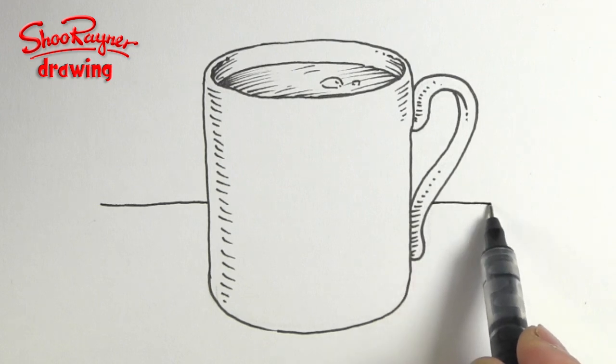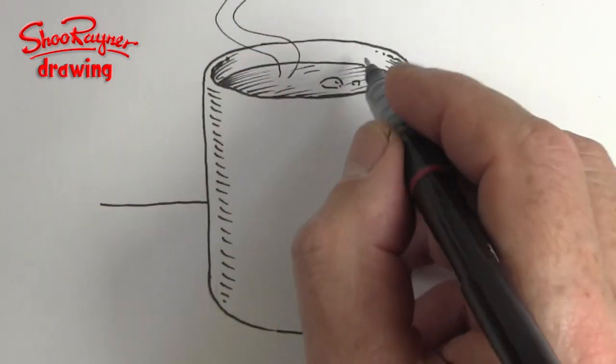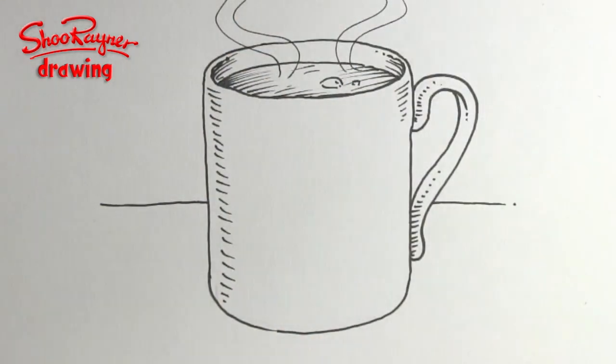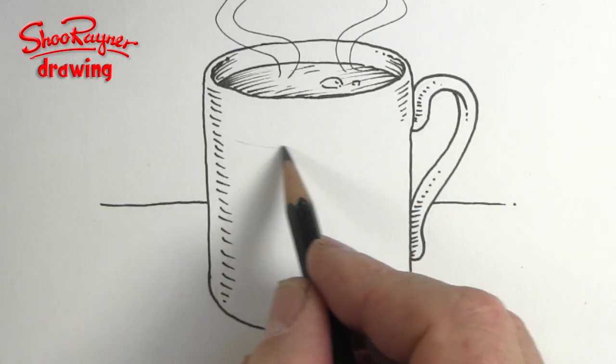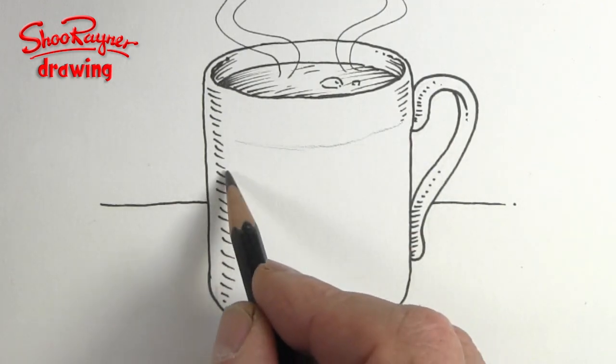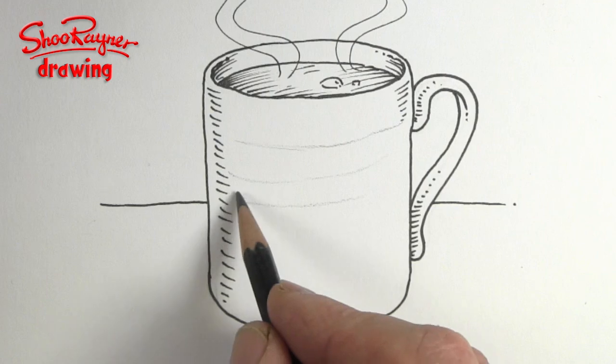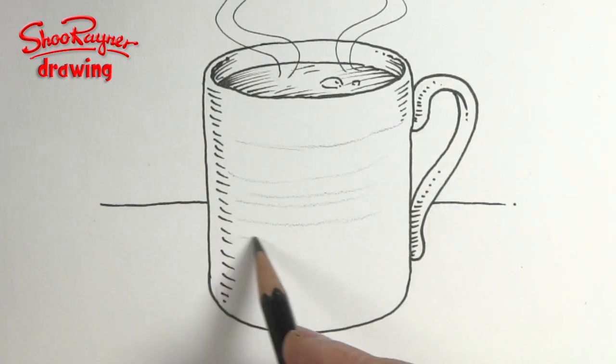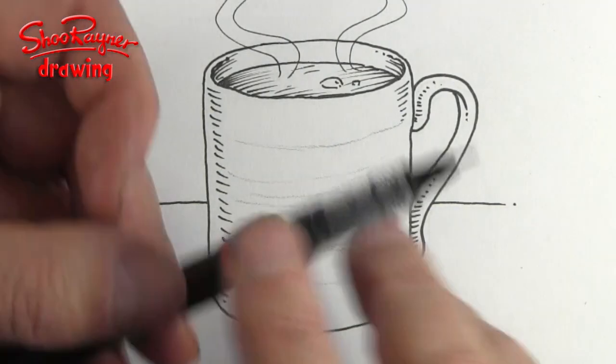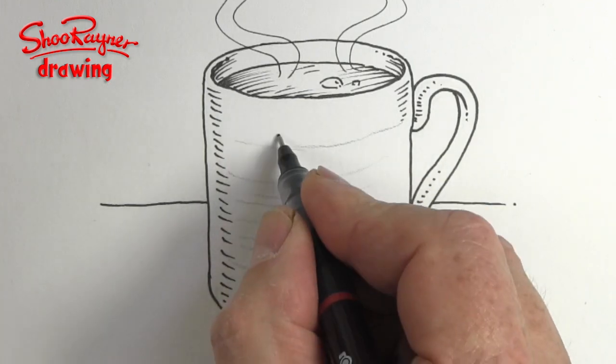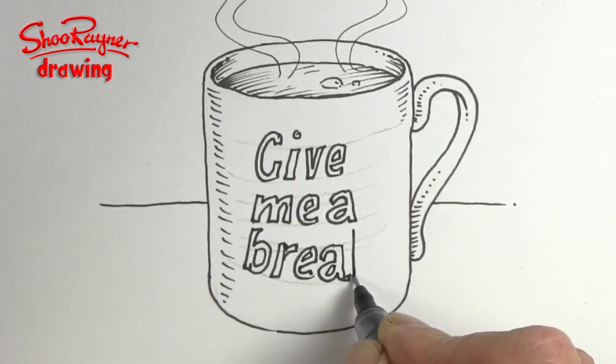I'm going to draw the table in the background there. We're going to want some steam coming off. And we need a design on here as well. If you're going to do lettering the lettering is going to be curved around as well. So you need to think about that. So I'm going to have give me a break.